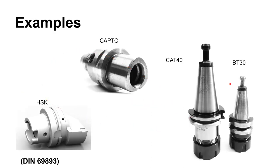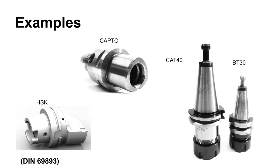The CAT40 is the taper in our machines downstairs; BT30 is another common size. The number indicates size — 50 is larger than 40, which is larger than 30. The Capto taper uses a polygon shape that's also tapered — a neat design that won't rotate in the holder. CAT-style holders require drive lugs that fit into slots to prevent rotation, and a pull stud retains the holder.